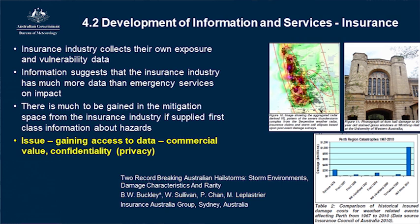The other challenge is confidentiality. When claims data comes in, they can't tell us exactly who's made a claim — there's a privacy agreement. But if you take a decimal point or two off the latitude and longitude recorded in the database, then we might only know where the claim is within 100 metres or even a kilometre. It's still useful. I see that one as being easier to get around, but still a challenge.